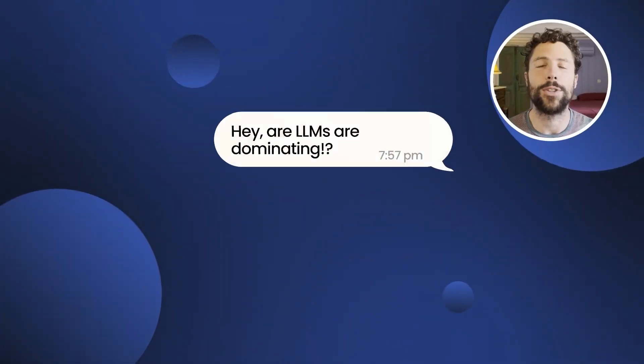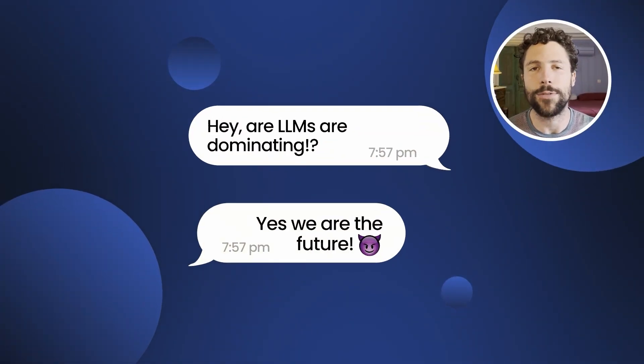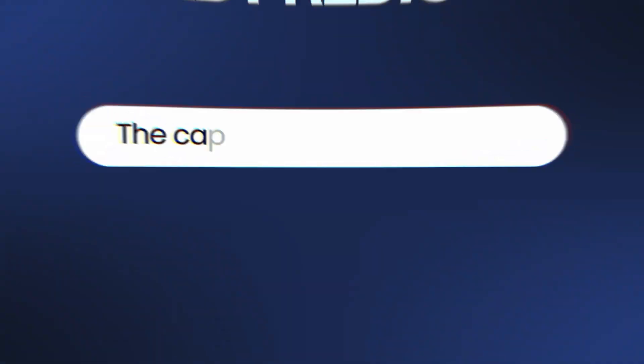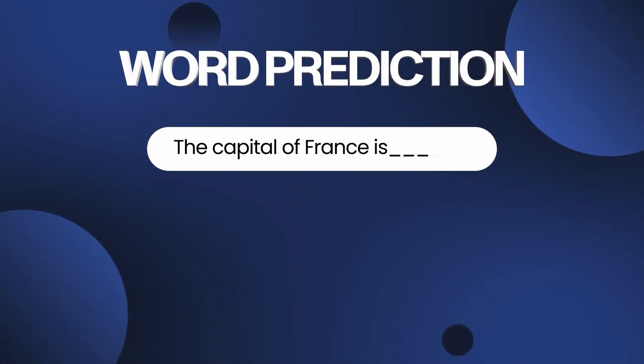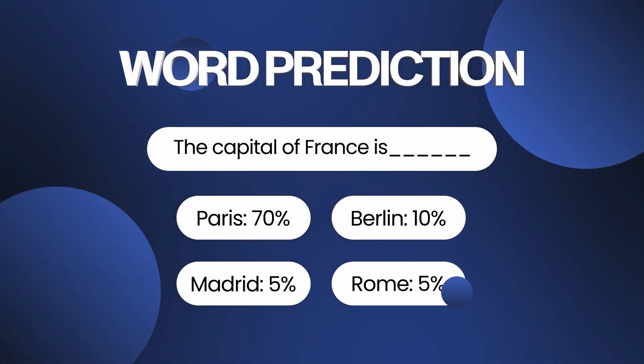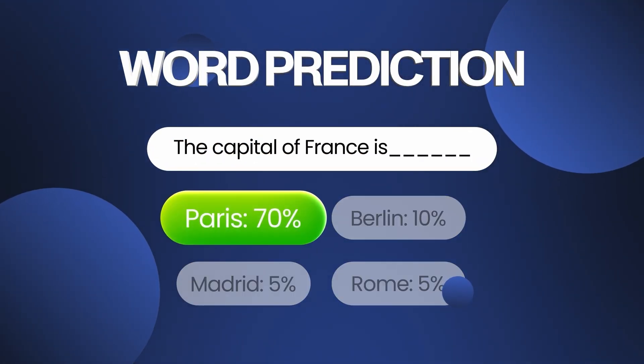Large language models or LLMs completely dominate today's conversation around AI. Quite often, even some AI insiders refer to LLMs as massive auto-completion algorithms that simply output the next most likely word. But is this simplistic description accurate at all?